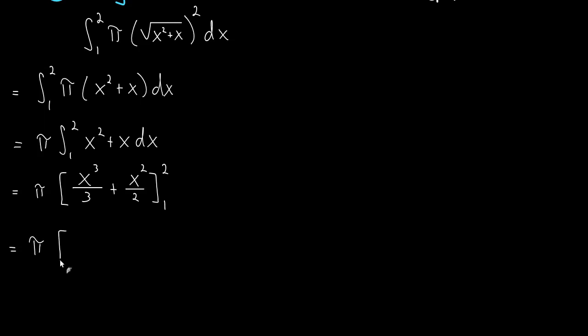Then we evaluate this between one and two. We'll plug in two, that gives us two cubed over three plus two squared over two, minus plugging in one, so we get one cubed over three plus one squared over two.